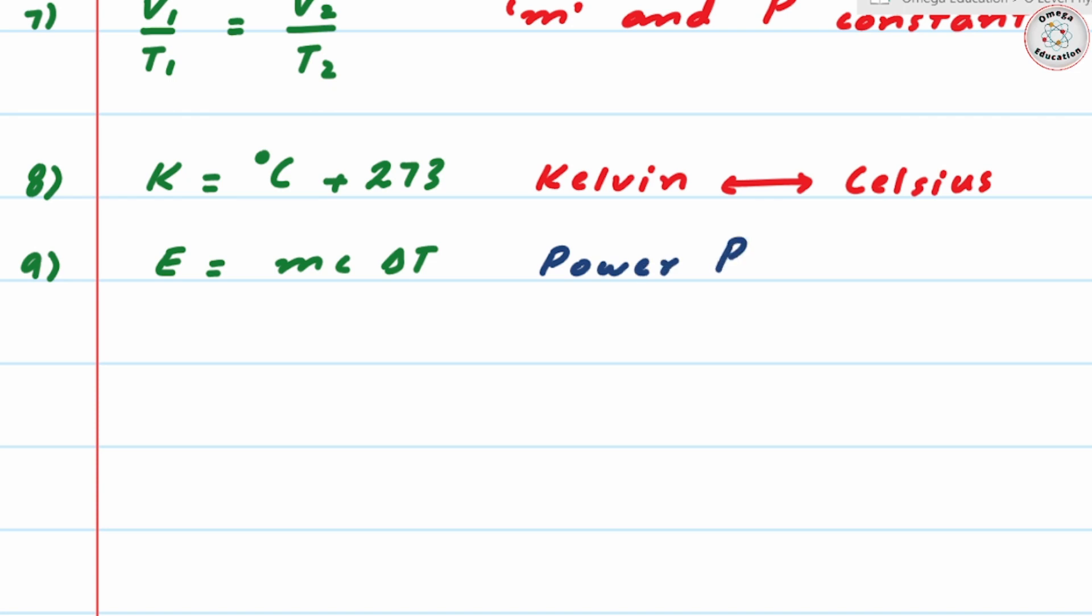Power P in watts and they give you the time for the use of the appliance in minutes or in hours. In that case your formula is rearranged as instead of energy you write power times time. But when you're using this formula you have to ensure that the power should be in watts and the time should be in seconds.